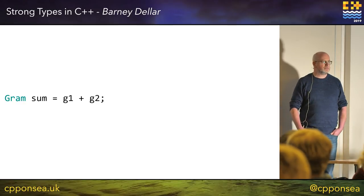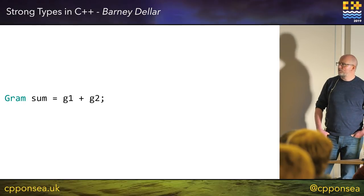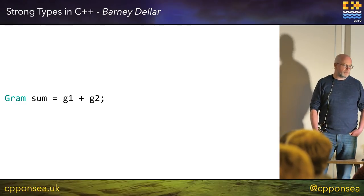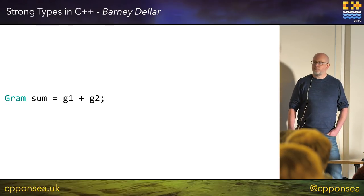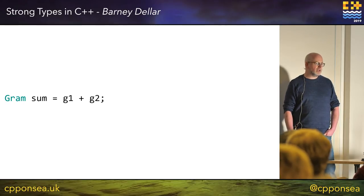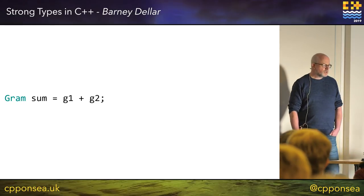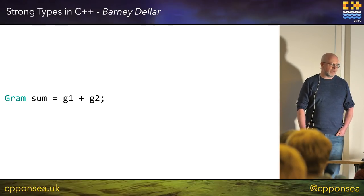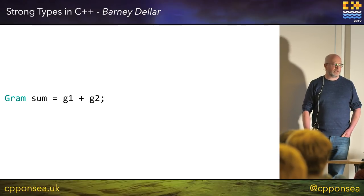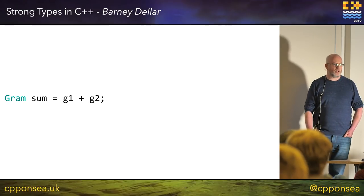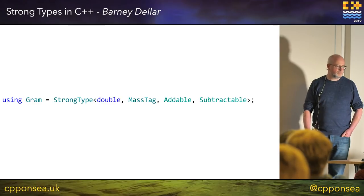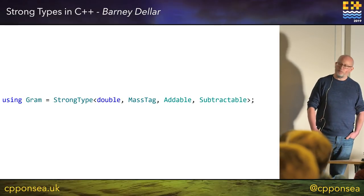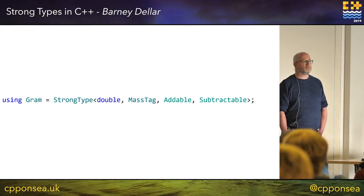Wouldn't it be nicer if we could just write code that adds two grams directly? It's cleaner, less cluttered, and doesn't require the reader to think about the details. And of course it's not just addition — we would like multiplication, division, etc. And we want to be able to select which operations we expose. For kilograms, we probably don't want to allow multiplication. So wouldn't it be nice if we could create some sort of skill that our strong type could inherit from? We could say that gram is addable or subtractable, and put the adding logic into that base class. But this generic base class would need to know about the underlying type in order to perform the operation.